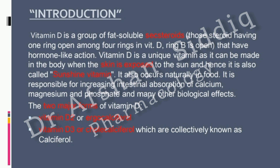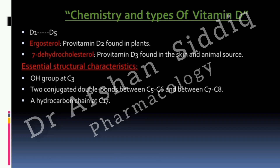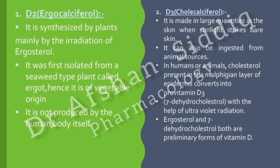Vitamin D is a group of secosteroids — those steroids having one ring among four rings that is open. All those compounds having one ring open, specifically the B ring. If you recall your course 309 when we were talking about phytosterol — phytosterol having four rings — Vitamin D is basically derived from phytosterol. Therefore, the ring structure is known as cyclopentanophenanthrene ring structure. Vitamin D is a secosteroid containing four rings resembling the phytosterol structure.